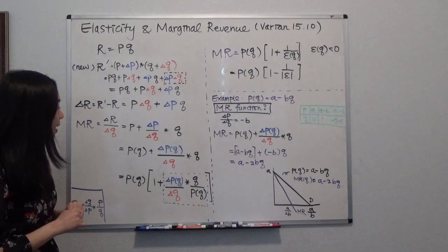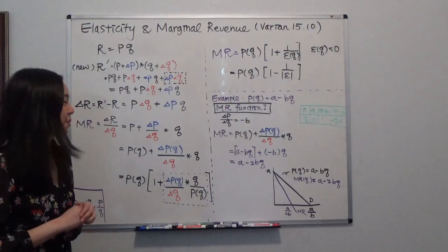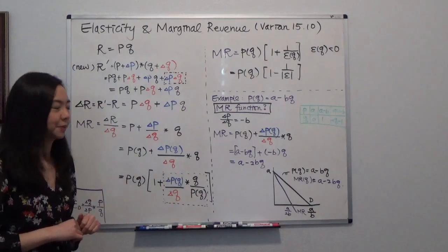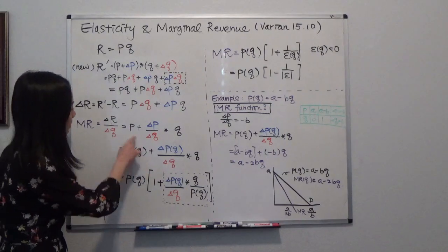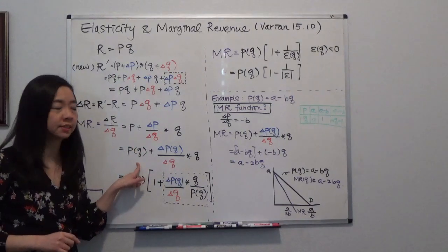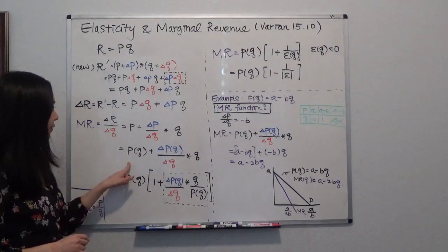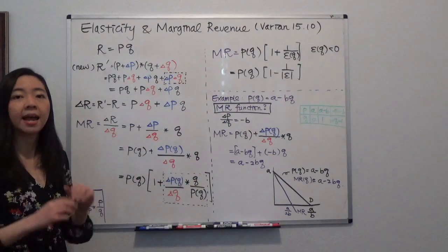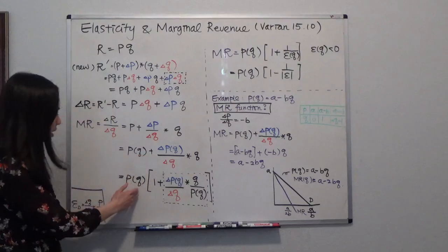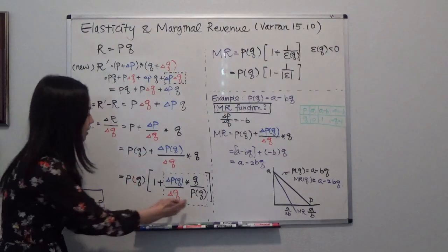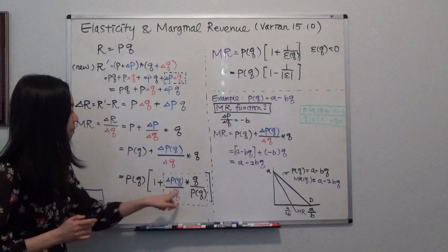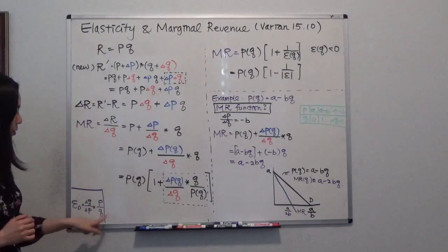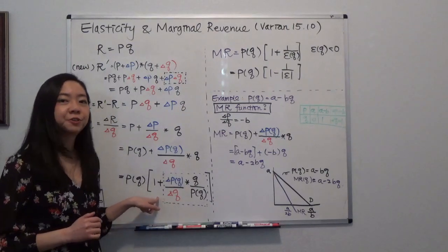And notice that we know when I'm a monopoly, your price is a function of the quantity. So I'm going to rewrite price as a function of the quantity. I didn't change anything here. And notice that I can also pull out the price. And inside of the bracket, I'm left with 1 plus the reciprocal of our elasticity of demand.